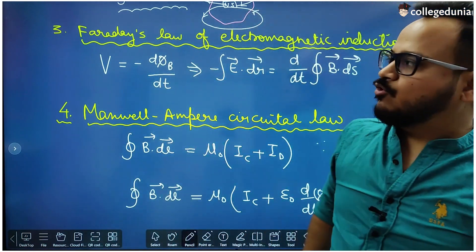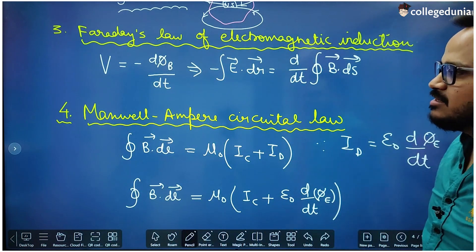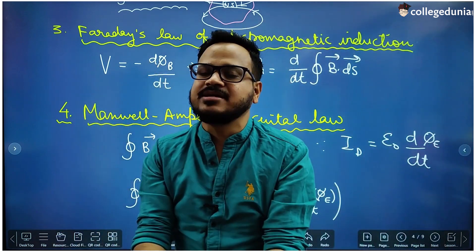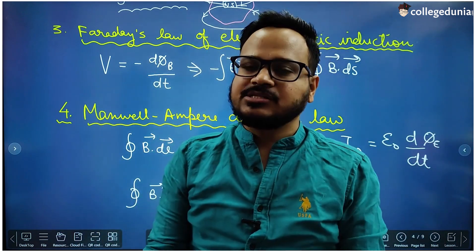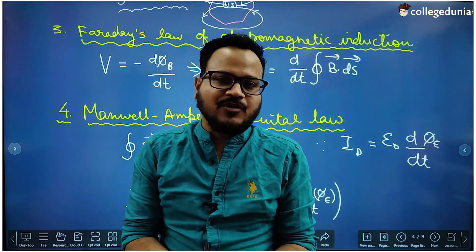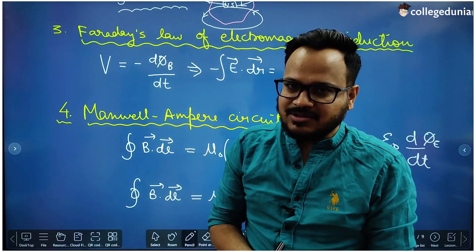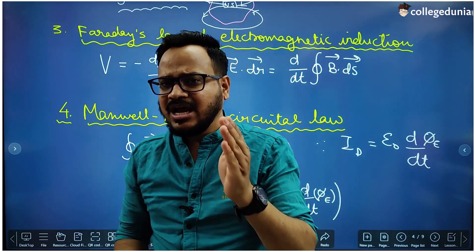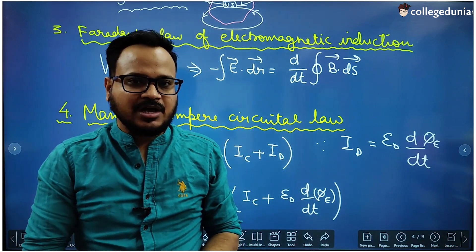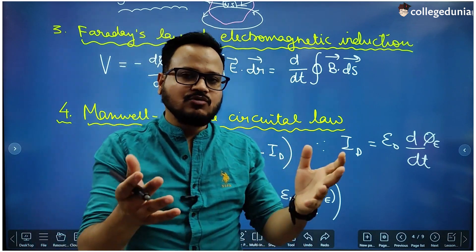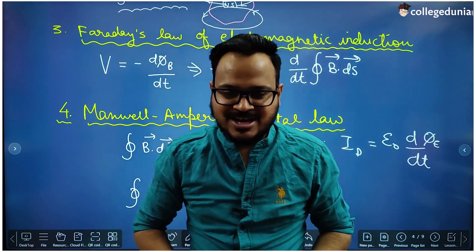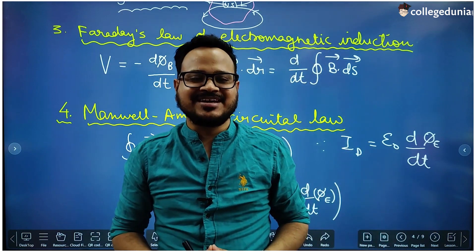So these four equations are called Maxwell's equations, and they are used to summarize the principles, concepts, and fundas of electromagnetism. These equations are very important in the electromagnetic waves chapter — you will see how when we study the concepts of electromagnetic waves. I will meet you in the next lecture; till then, all the very best. Bye.